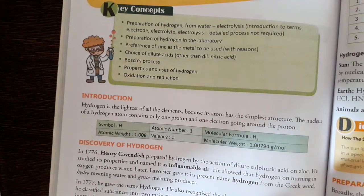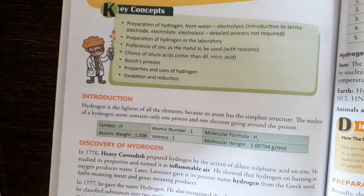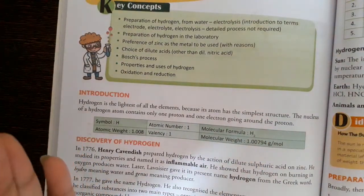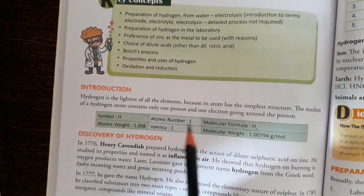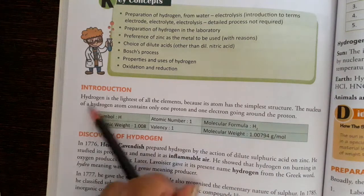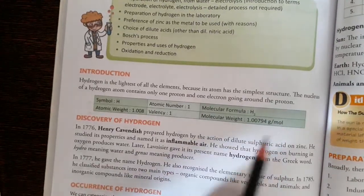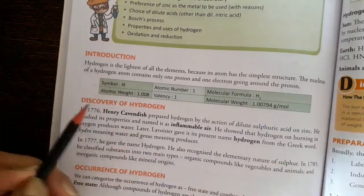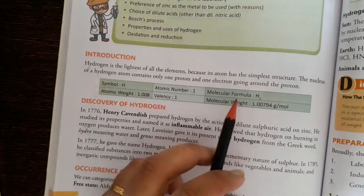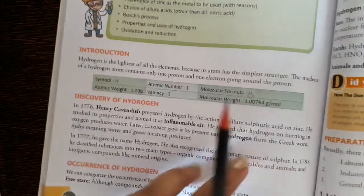As we know that hydrogen is the first element of our periodic table. Introduction: Hydrogen is the lightest of all the elements. The nucleus of the hydrogen atom contains only one proton and one electron going around the proton. Symbol hydrogen, atomic weight 1.008, atomic number 1, valency 1, molecular formula H2, molecular weight 1.00 gram per molecule.